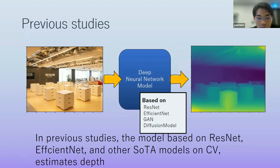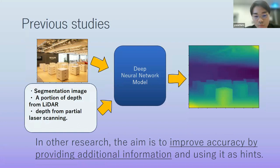So there are lots of research about depth estimation from single RGB images using a deep learning model. In previous studies, the model based on ResNet or EfficientNet and other SOTA models in another image processing task, like image classification, estimate depth. So researchers modified those models architecture or training method or invented new loss function or augmented more dataset or use a large dataset. In other research, to improve accuracy of network, they provide additional information, like segmentation image, or a portion of depth from LiDAR sensor, or depth from partial LiDAR scanning, and they use it as a hint for estimation.